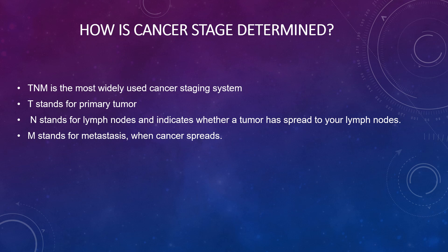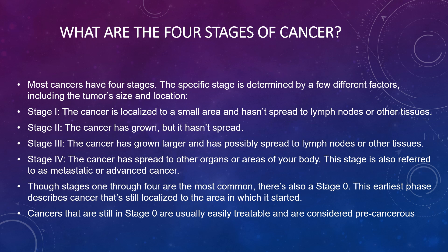How is cancer stage determined? Using the TNM system: T stands for primary tumour, N stands for lymph nodes (indicating whether the tumour has spread to lymph nodes), and M stands for metastasis (when cancer spreads). There are four main stages: Stage 1 — cancer is localised to a small area and hasn't spread; Stage 2 — the cancer has grown but hasn't spread; Stage 3 — the cancer has grown larger and has possibly spread to lymph nodes or other tissues; Stage 4 — the cancer has spread to other organs or areas of the body, also referred to as metastatic or advanced cancer.